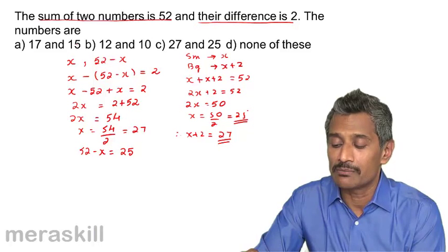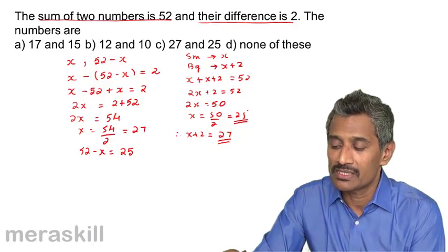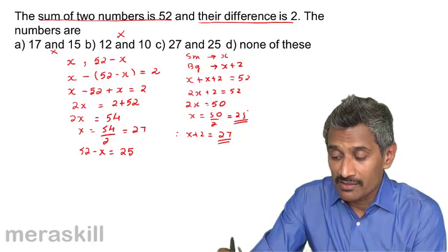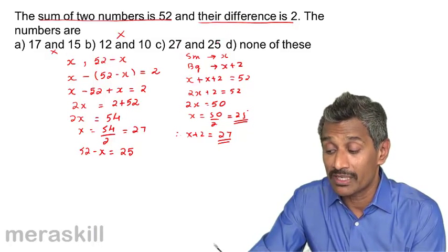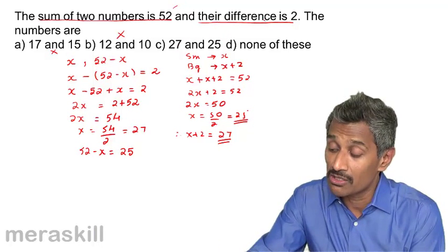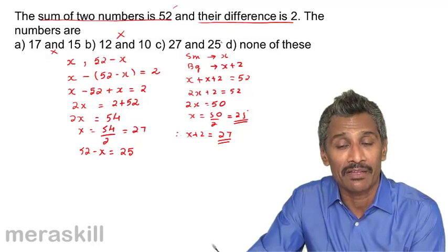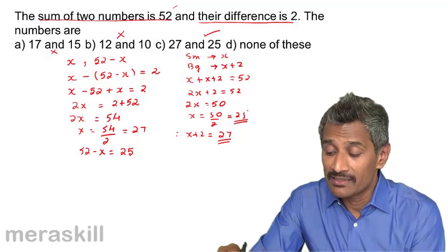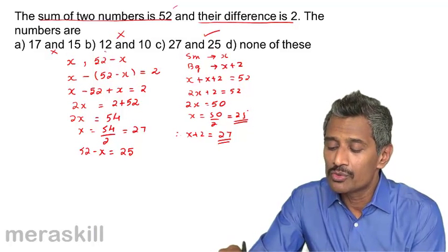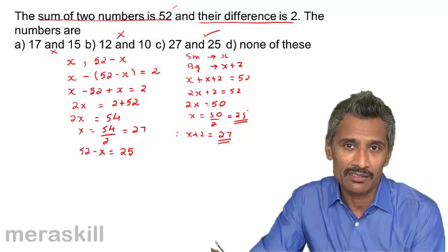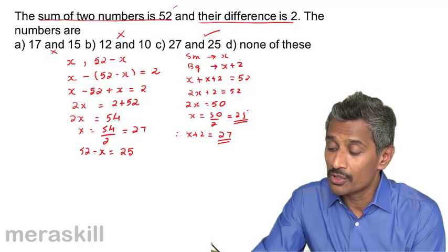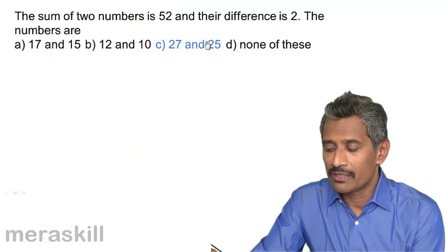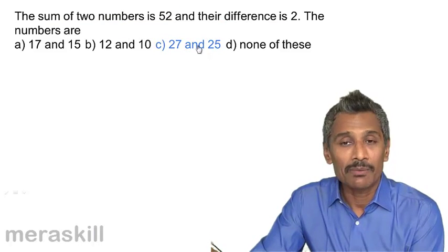We can also solve by substitution and check. Option 17 plus 15 equals 32 — not satisfying. 12 plus 10 equals 22 — not satisfying. 27 plus 25 equals 52, satisfying the first condition, and 27 minus 25 equals 2, satisfying the second. So the numbers are 27 and 25.